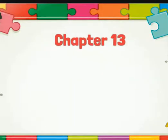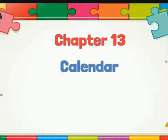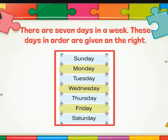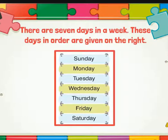Chapter 13: Calendar. There are seven days in a week. These days in order are: Sunday, Monday, Tuesday, Wednesday, Thursday, Friday, Saturday. The week begins on Sunday. The week ends on Saturday. The days of the week always repeat. After Monday comes Tuesday. After Tuesday comes Wednesday, and so on.